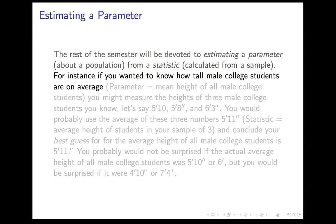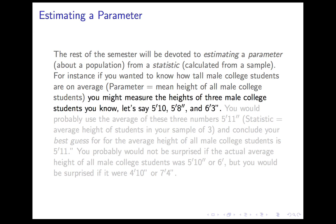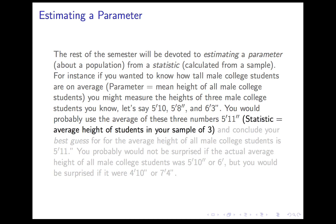For instance, if you want to know how tall all male college students are on average, that's a parameter — the mean height of all male college students. What you might do to explore that is measure the heights of, say, three male college students you know. Let's say they come out to be 5'10", 5'8", and 6'3". The average of those three numbers is 5'11". That's a statistic — the average height of the students in your sample.